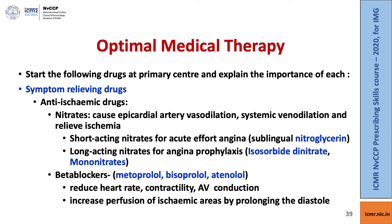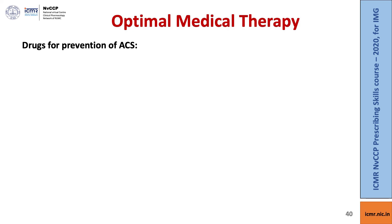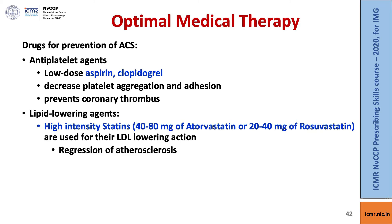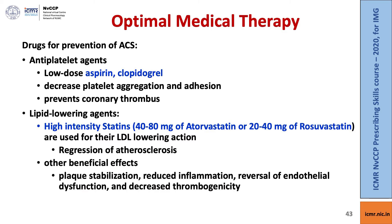Beta-blockers such as metoprolol, bisoprolol, and atenolol reduce heart rate, contractility, and AV conduction. They also increase reperfusion of ischemic areas by prolonging the diastole. For the prevention of acute coronary syndromes, anti-platelet agents such as low-dose aspirin and clopidogrel decrease platelet aggregation and prevent coronary thrombus. Lipid-lowering agents — guidelines recommend the use of high-intensity statins such as 40 to 80 mg of atorvastatin or 20 to 40 mg of rosuvastatin — are used for their LDL-lowering action primarily, and also help in regression of atherosclerosis. Other beneficial effects of statins include plaque stabilization, reduced inflammation, reversal of endothelial dysfunction, and decreased thrombogenicity.